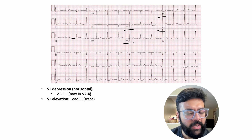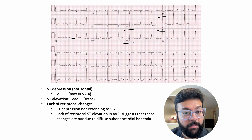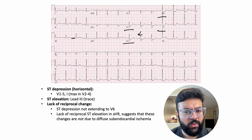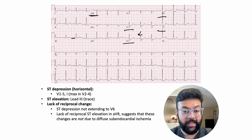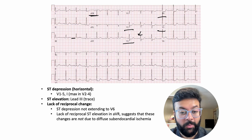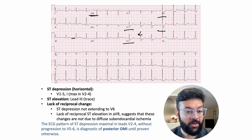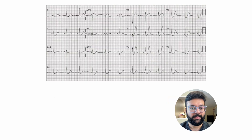The important thing to note is that the ST depressions are horizontal and located in the anterior chest leads, with no reciprocal changes in AVR. Horizontal ST depression in the anterior leads means something is going on in the posterior wall — so this is posterior STEMI, also called posterior OMI.